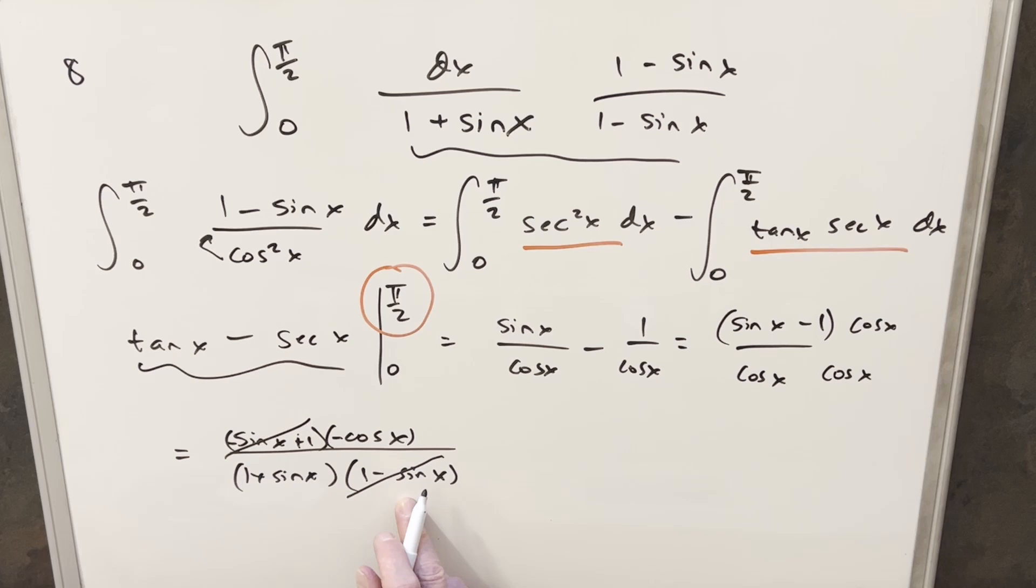And then at this point, we've kind of fixed this problem. The 1 minus sine x was our real problem with evaluating this pi over 2. And now that we've canceled it, I think we're in good shape.